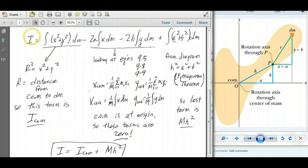So therefore, the moment of inertia is equal to the moment of inertia at the center of mass, which is just the integral of R squared dm, plus mh squared. And there you have it, the parallel axis theorem. Thank you.